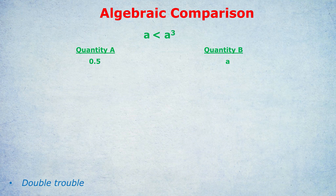Time for another question. Here we go: A is less than A cubed. Which one's bigger, quantity A or quantity B — which is 0? The answer isn't always going to be D, by the way. Pause the video and try this out yourself if you want.